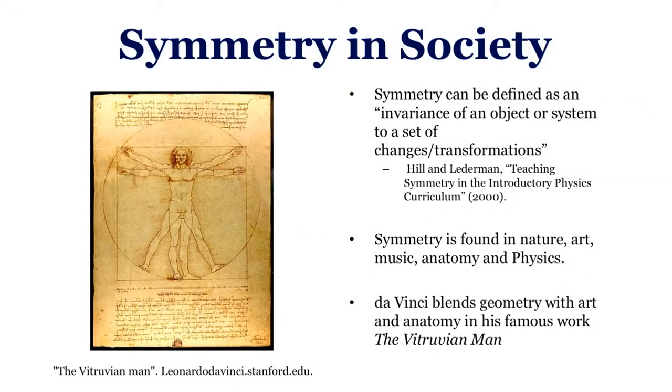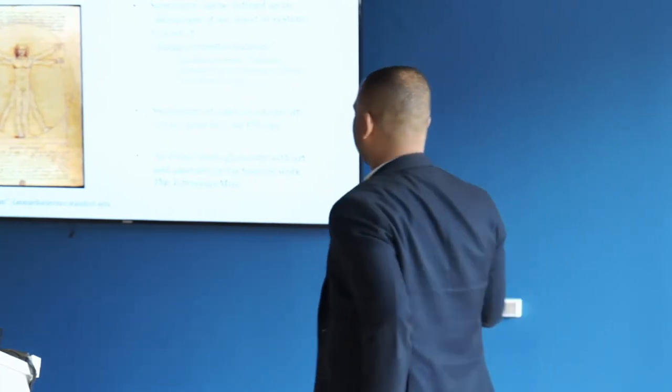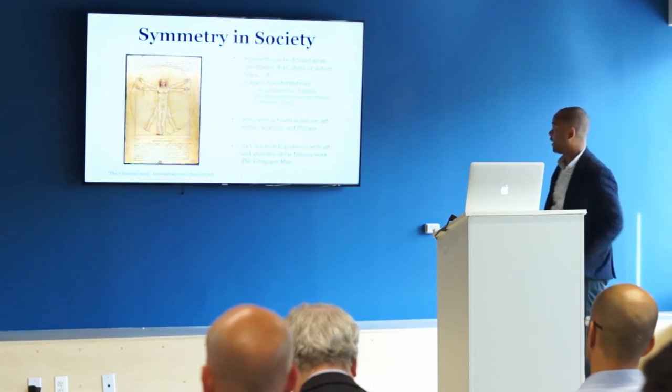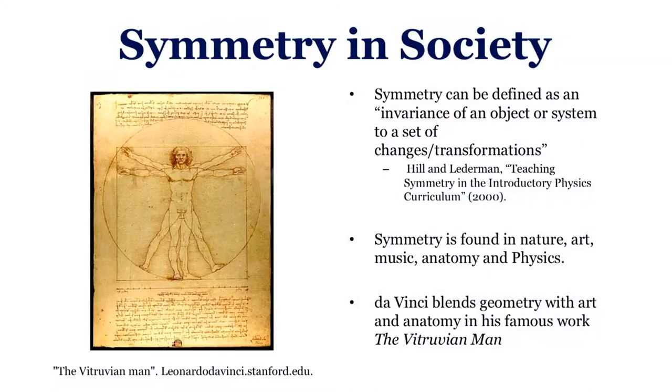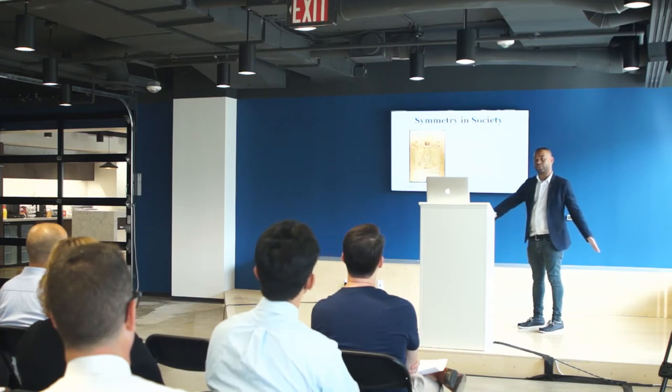We can define symmetry as the invariance of an object to some type of change. And more importantly, you can find symmetry in all aspects of society — music, nature, art, mathematics. It's beautifully presented by Leonardo da Vinci in his famous work, the Vitruvian Man. I'd like to point out that this is actually a combination of art, geometry, and anatomy. It features a man centered at a square, where the navel of the man is also the center of the circle. As he is in two positions, his legs are spread, which creates an equilateral triangle. His wingspan is actually the same length as his height, as indicated by the square.